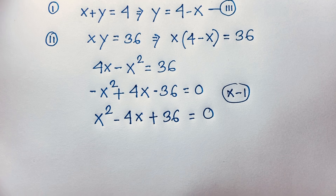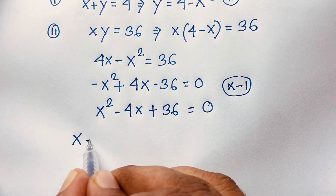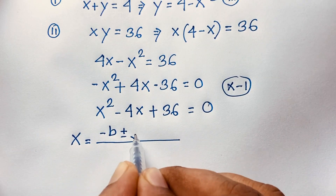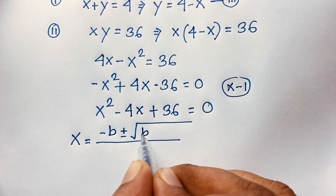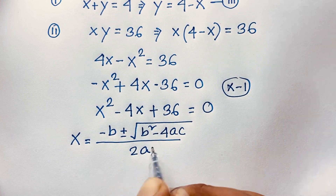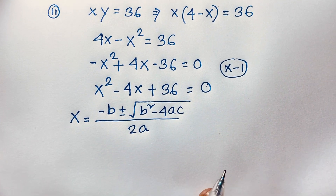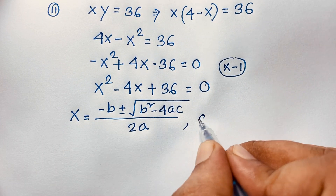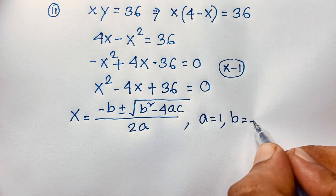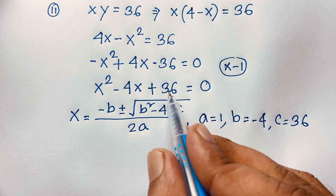Now, we will apply the quadratic formula: x equals minus b plus or minus square root of b squared minus 4ac, all over 2a. Applying this formula, you can easily identify: a is equal to 1, b is equal to negative 4, and c is equal to 36.